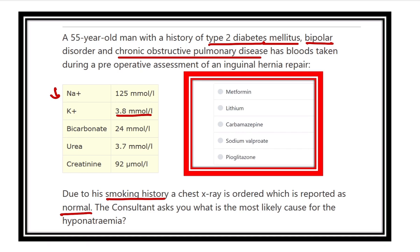The consultant asked: what is the most likely cause for hyponatremia? The patient is suffering from type 2 diabetes mellitus, bipolar disorder, and COPD, so the patient is taking different types of drugs — including type 2 diabetic drugs such as metformin, drugs for bipolar disorder, and drugs for COPD.